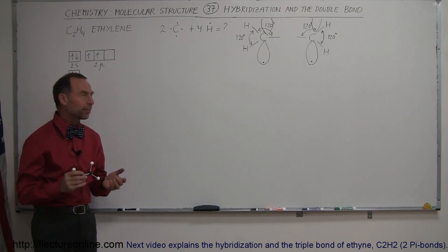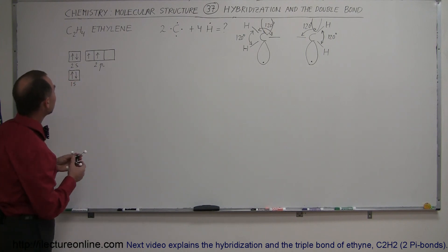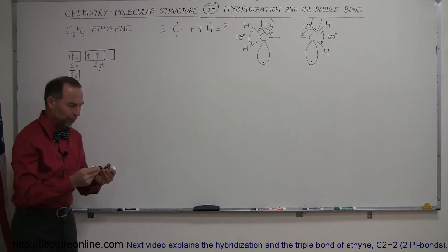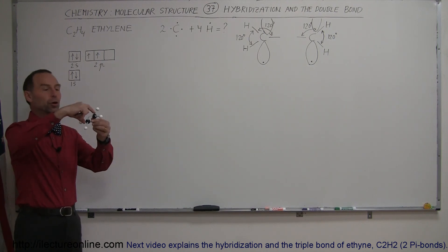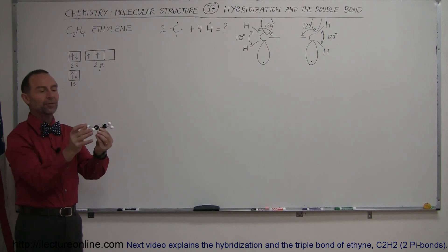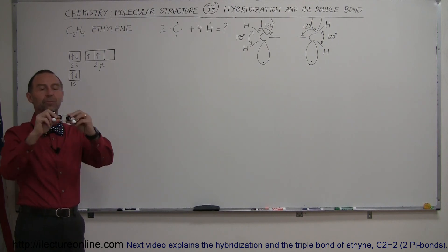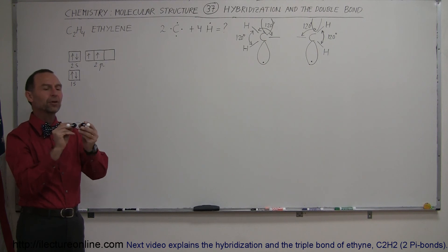Traditionally, when we talked about something like ethylene, we have C2H4, we thought of it as a molecule that looked a little bit more like this. We have two carbon atoms, each carbon atom is attached to hydrogen atoms, and then we know there's a double bond between the two carbon atoms.